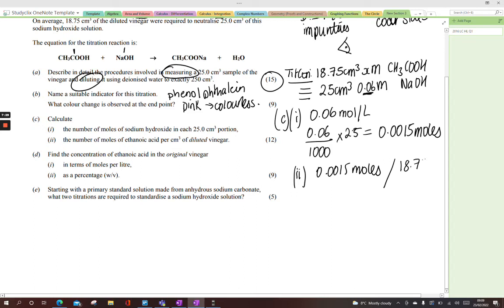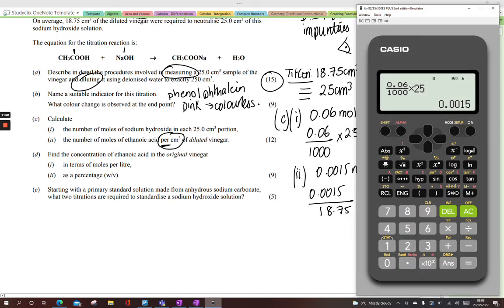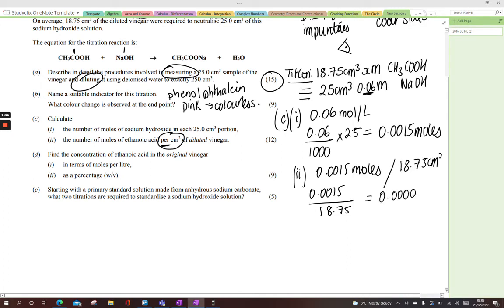And that's it. This is the crucial bit. 18.75 centimetres cubed. Now usually I would leave it like that, but in this question they're being pesky. They're technically saying per centimetre cubed. Per centimetre cubed means in 1 centimetre cubed. So that's the number of moles we have in 18.75. When you see that slash, that just means divided by. This will give me the answer. 8 by 10 to the minus 5 moles per centimetre cubed of ethanoic acid. And that's diluted vinegar. That's the diluted vinegar.